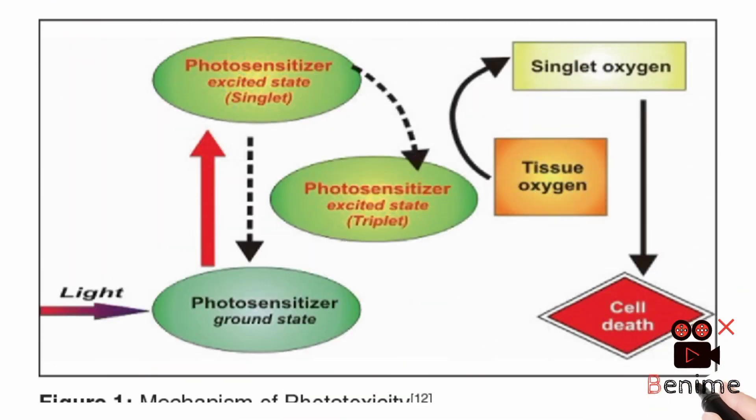Now let's look at this figure. We see light — when a photosensitizer is in the ground state, it absorbs light and becomes excited. After absorbing the light, the photosensitizer reaches an excited state, and then transitions to a triplet state. From the triplet state, it interacts with oxygen molecules.